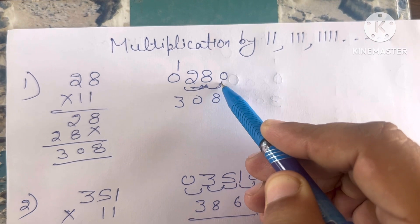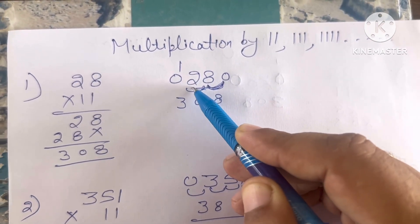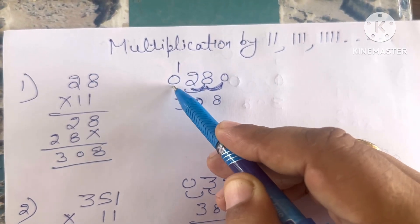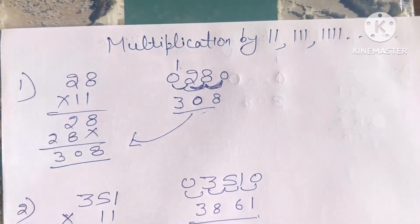Now, add two numbers like this. 8 plus 0, 8. 2 plus 8, 10. 1 carry. 0 plus 2, 2 plus 1, 3. So answer comes out to be 308.